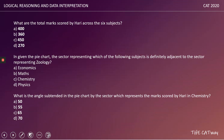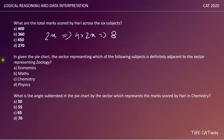Question 1: What is the total marks scored by Harri across all six subjects? Maths = 90 and it represents 90° out of 360°, which is one-quarter of the total. So total marks = 90 × 4 = 360. The answer is option B.